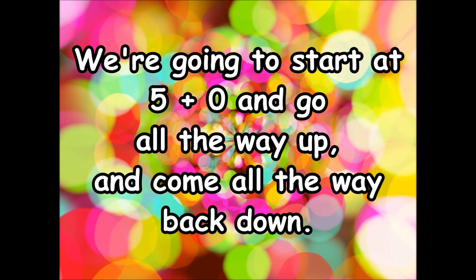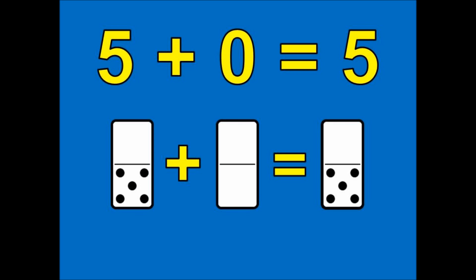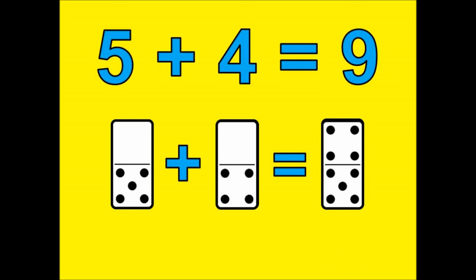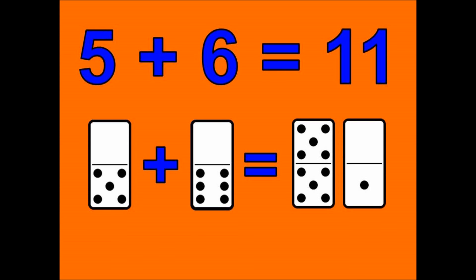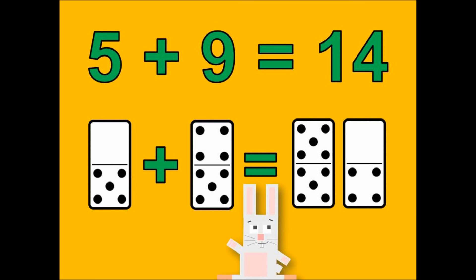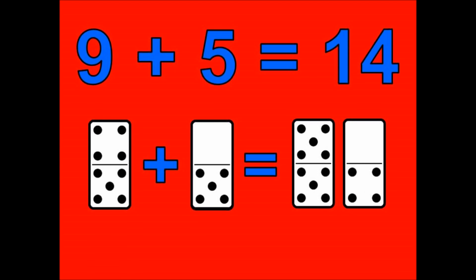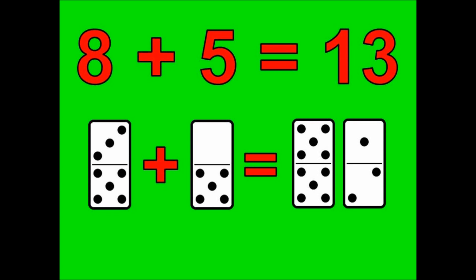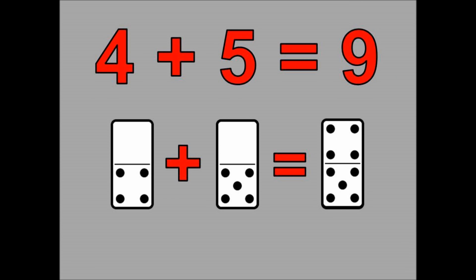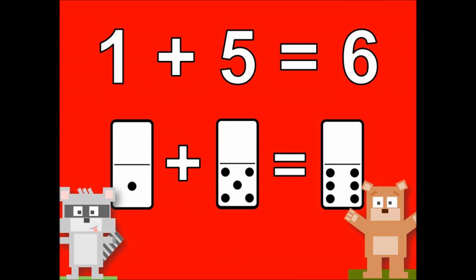Okay, here we go. We're going to start at five plus zero and go all the way up and come all the way back down. Five plus nine is fourteen. Five plus ten is fifteen. Now let's go back down. Ten plus five is fifteen. Nine plus five is fourteen. Eight plus five is thirteen. Seven plus five is twelve. Six plus five is eleven. Five plus five is ten. Four plus five is nine. Three plus five is eight. Two plus five is seven. One plus five is six. Zero plus five is five. And now you know how to add by five.